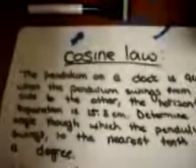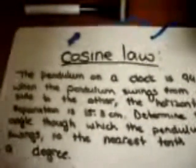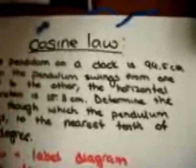Now that we know how to use the cosine law, let's use this formula in a real-life situation. The question is: the pendulum on a clock is 94.5 centimeters. When the pendulum swings from one side to the other, the horizontal separation is 15.3 centimeters. Determine the angle through which the pendulum swings to the nearest tenth of a degree.